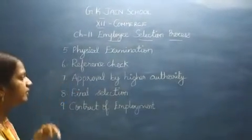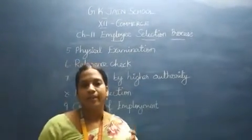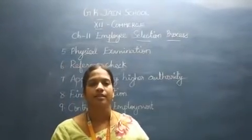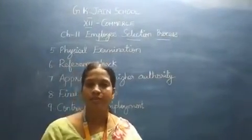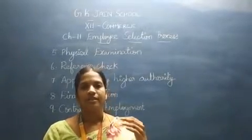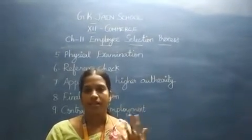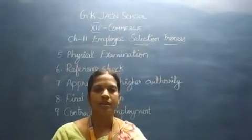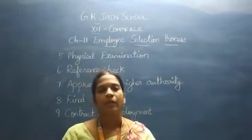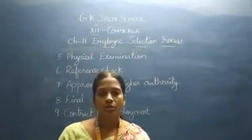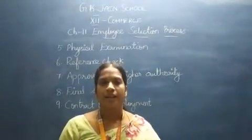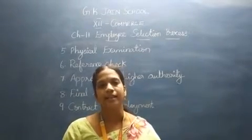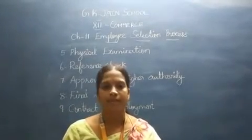Next we move on to the reference check, which is step six. In the application blank itself, there is a column for reference where a name and contact number needs to be given. Organizations ask for one or two reference persons depending on their policy. The purpose of asking for this reference is to know the character, conduct, attitude, and behavior of the candidate.